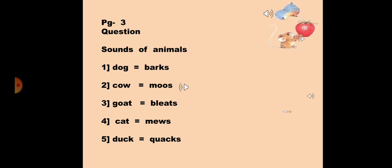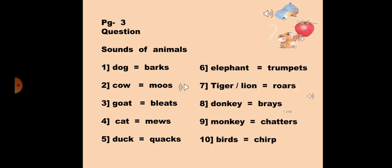You can also say dog bow-bow, cat mew-mew or duck quack-quack. Similarly there are some more like elephant trumpets, tiger or lion roars, donkey brays,